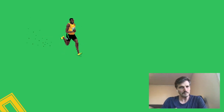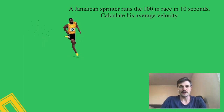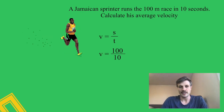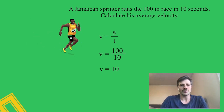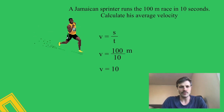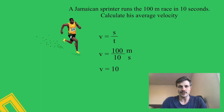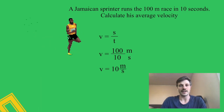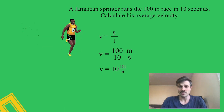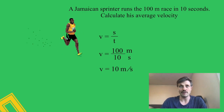Let's do a simple example: a Jamaican sprinter runs the 100-meter race in 10 seconds — calculate his average velocity. Velocity equals displacement over time: 100 divided by 10 gives us 10. The unit here is meters per second. We can't divide meters by seconds to create a new unit name, so we write it as m/s in everyday life, but in physics the correct notation is m·s⁻¹ — meters times an inverted second — which is the same thing.